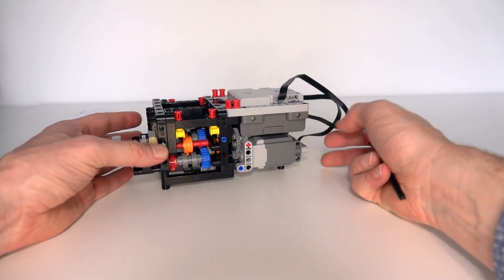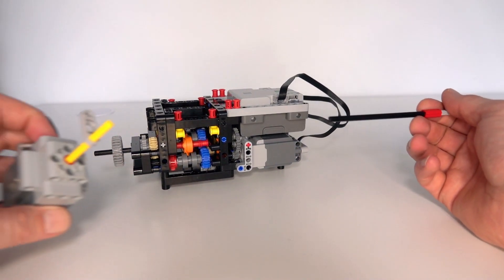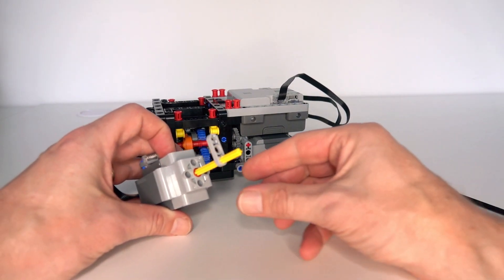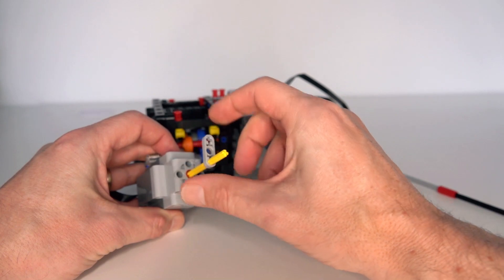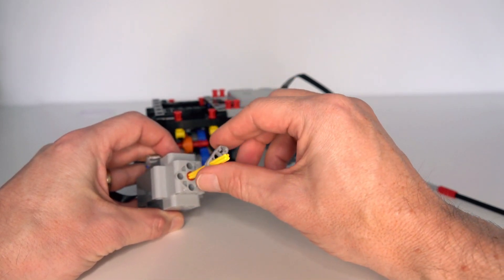One of the big benefits of the powered up system is that you can connect it to a smartphone and control your motors very accurately. For example, you can set the exact speed of the motor in revolutions per minute.